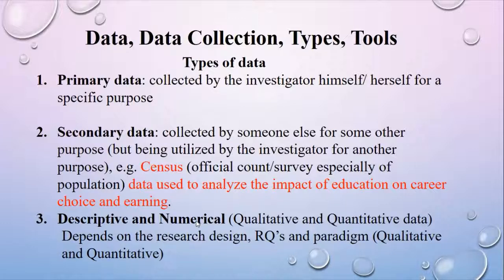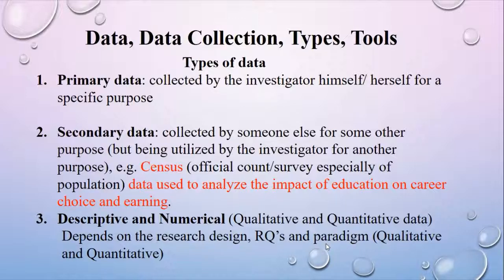Descriptive and numerical data: as can be understood from their names, descriptive data is collected in a qualitative form, and numerical data is collected in a quantitative form. The types of data depend entirely on the research design, research questions, and paradigm. Paradigm can be qualitative or quantitative — we will talk about paradigm in another lecture comprehensively.